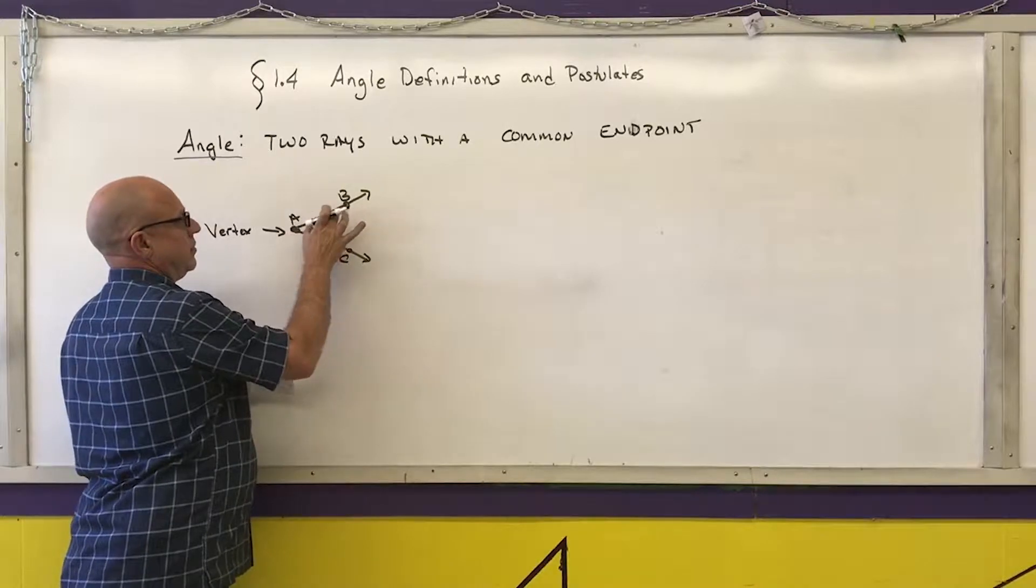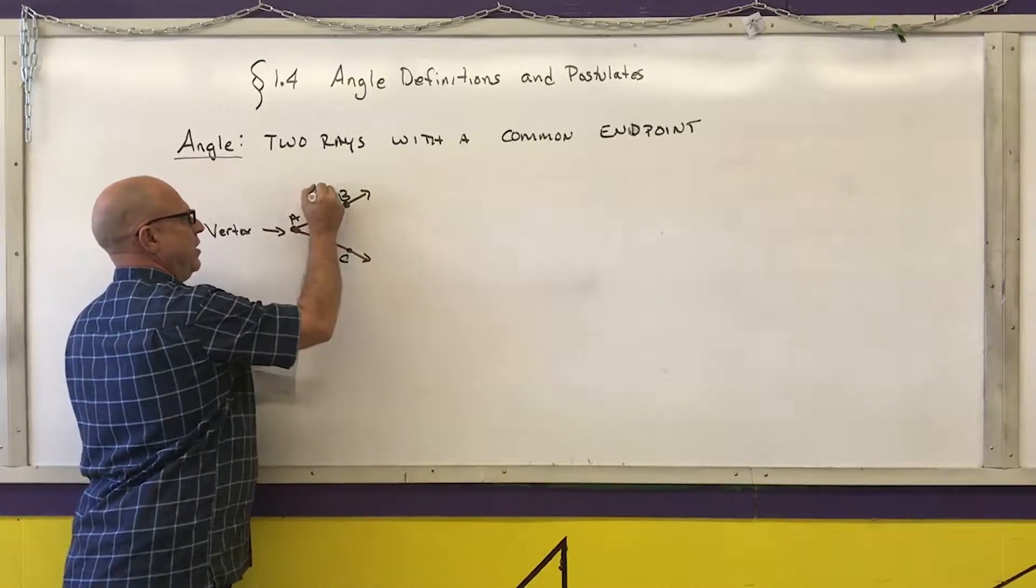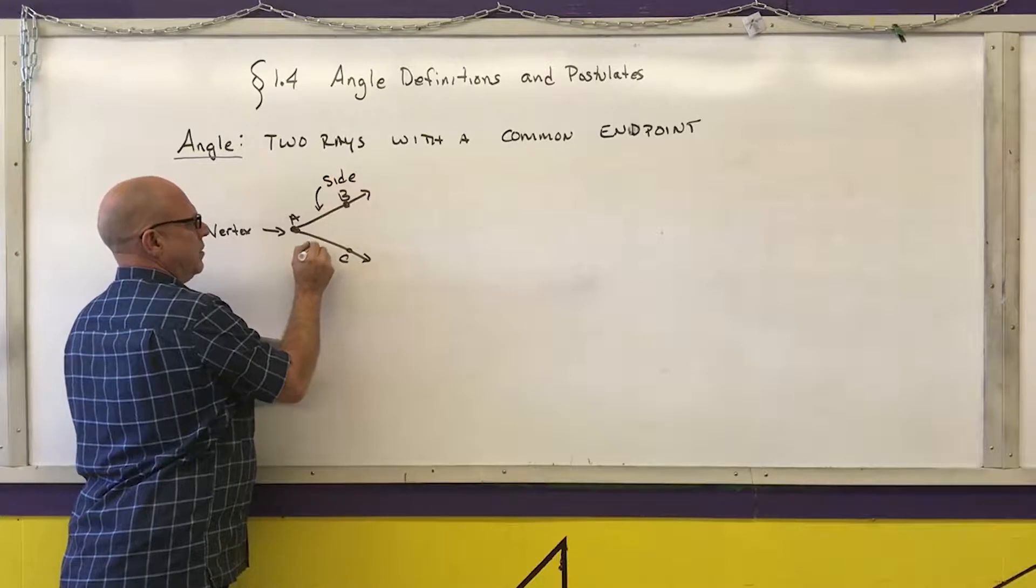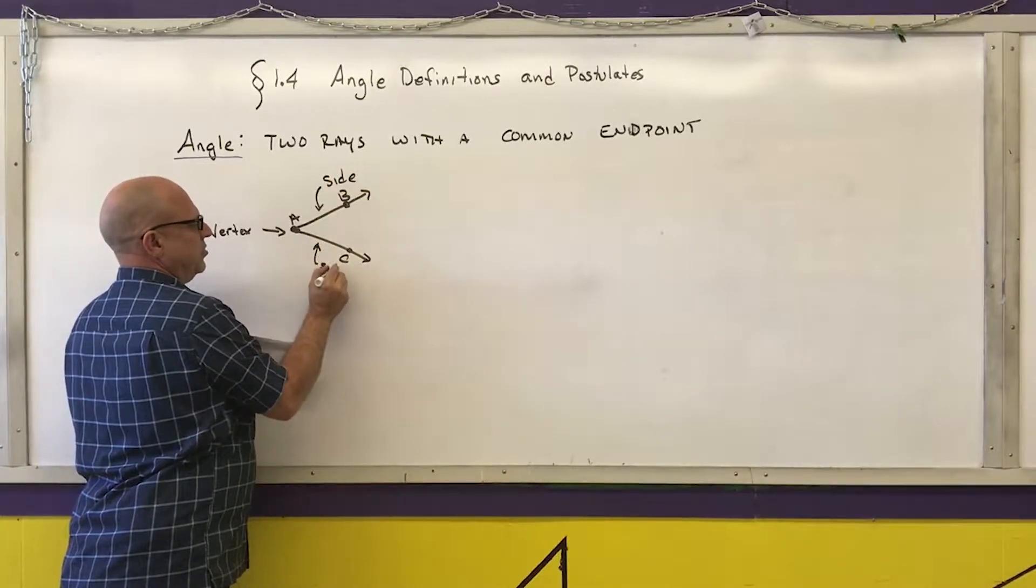The segment, or the ray that's AB, that's called a side. And there are two sides to any angle.